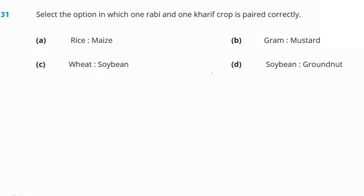Select the option in which one rabi and one kharif crop are correctly paired. In option B, gram is a rabi crop and mustard is a kharif crop — this is correctly paired. Option B is our right answer.